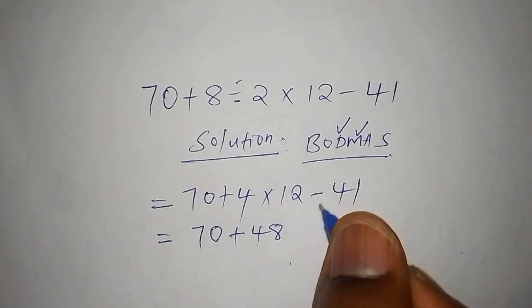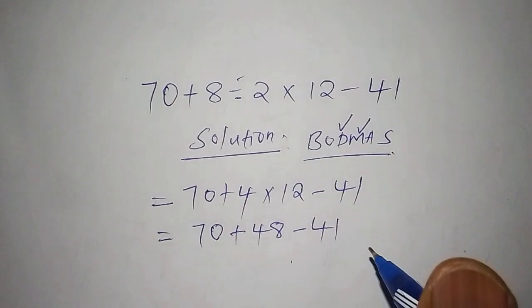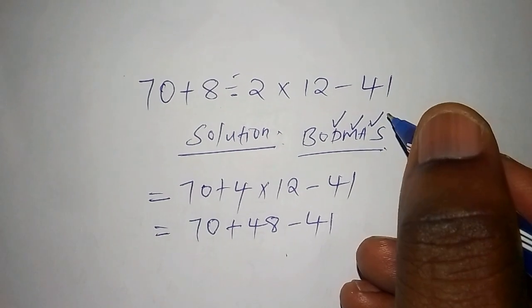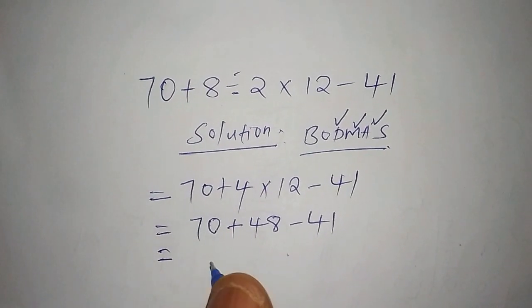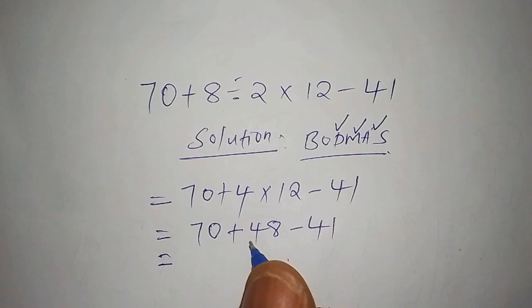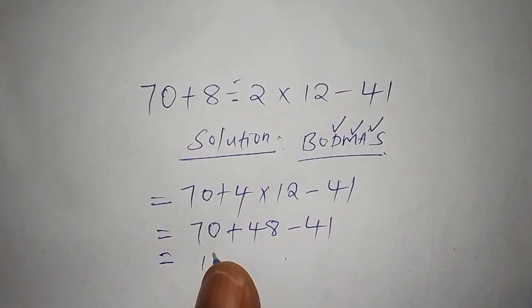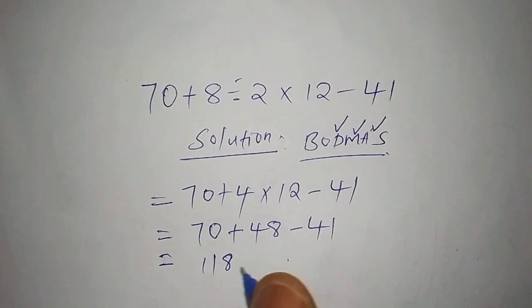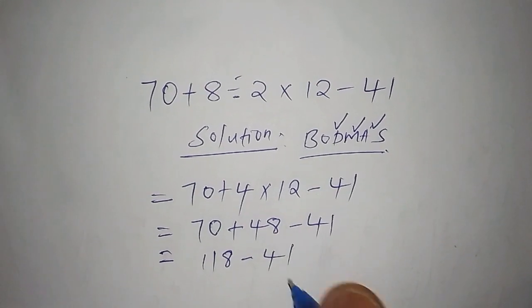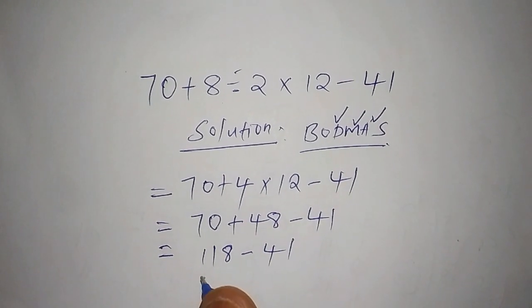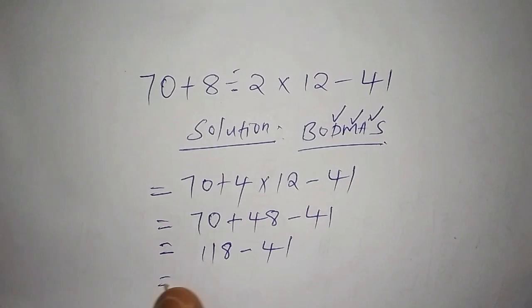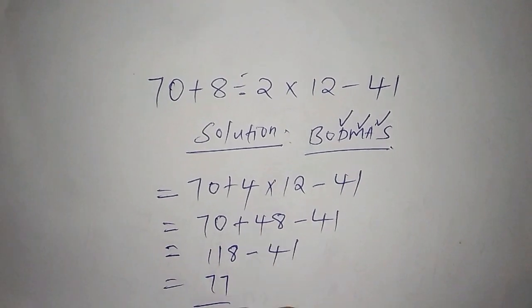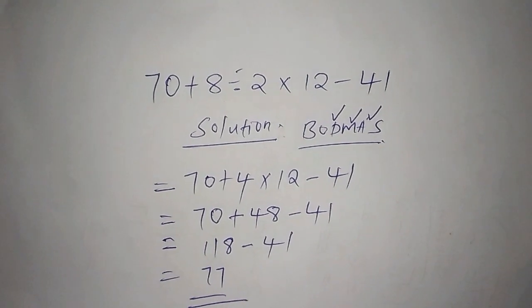From multiplication we move to addition, so we're going to work out this one. Now shall be equals to 70 add to 48, and the answer is 118, subtract from 41. So when we have 118 subtract to 41, our answer shall be 77. Remember to subscribe to this channel, thank you.